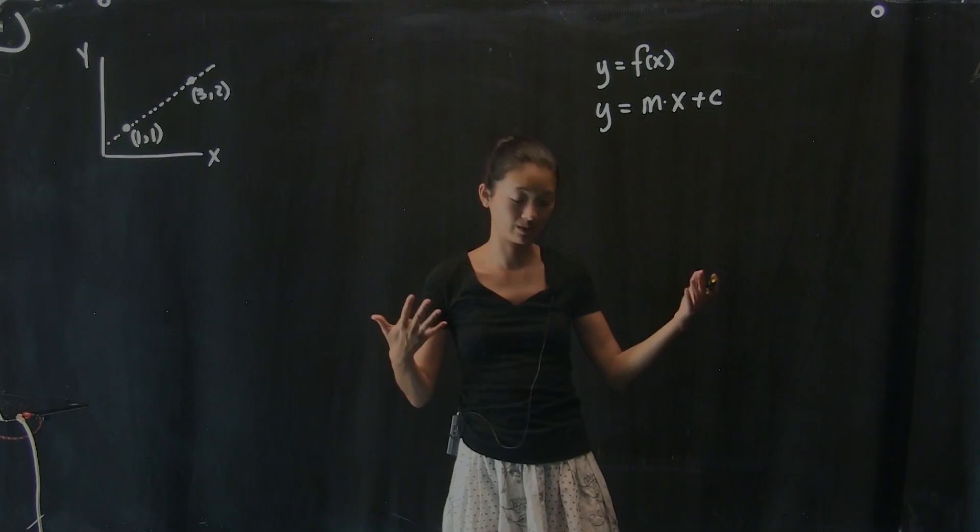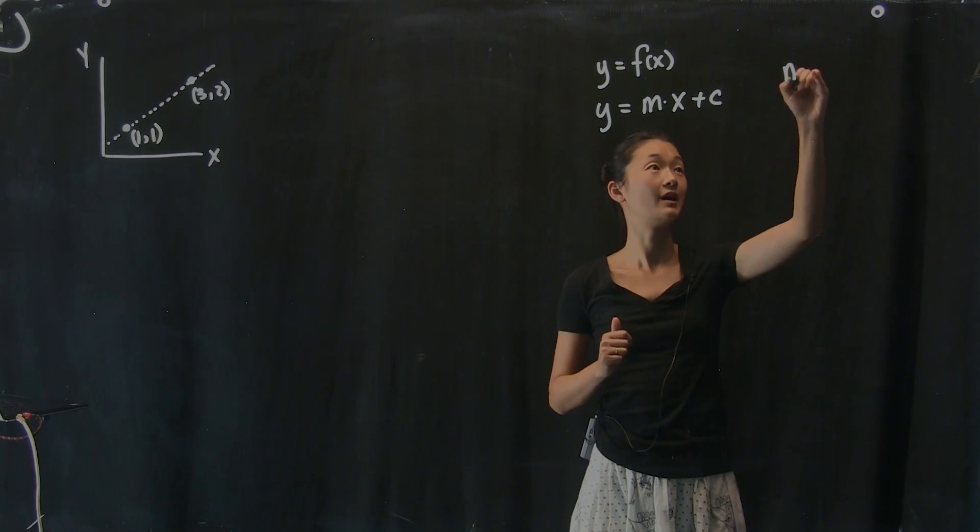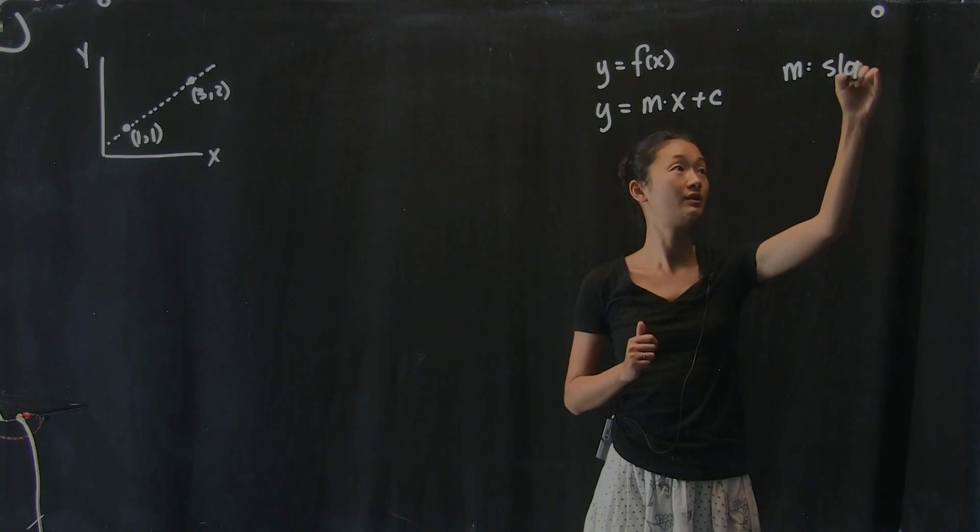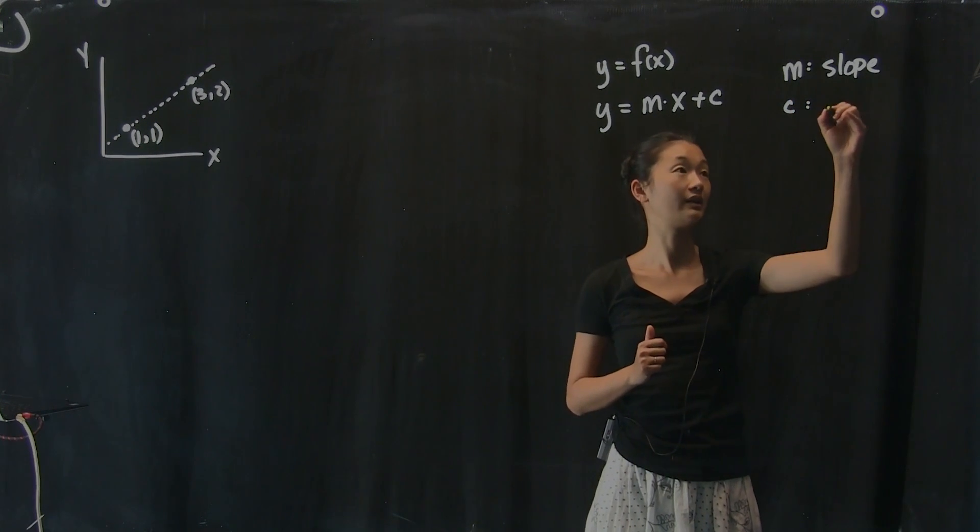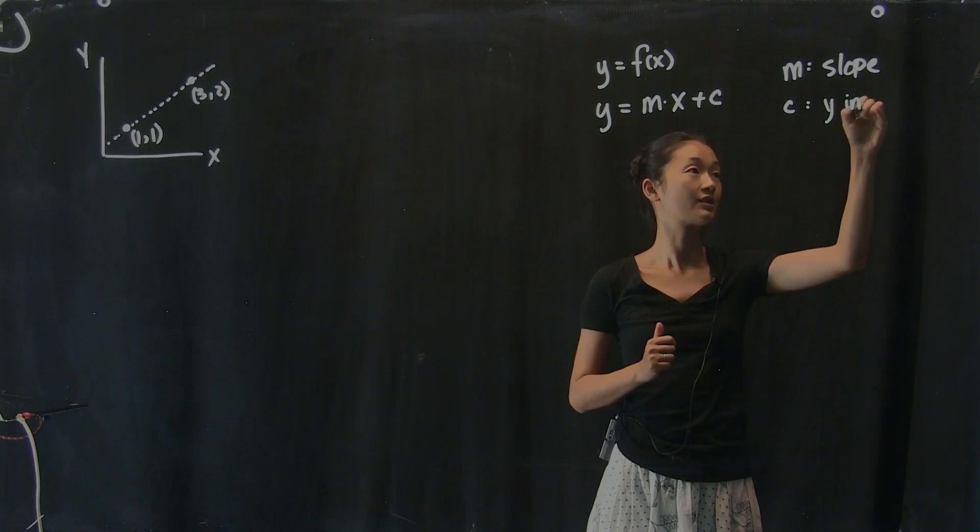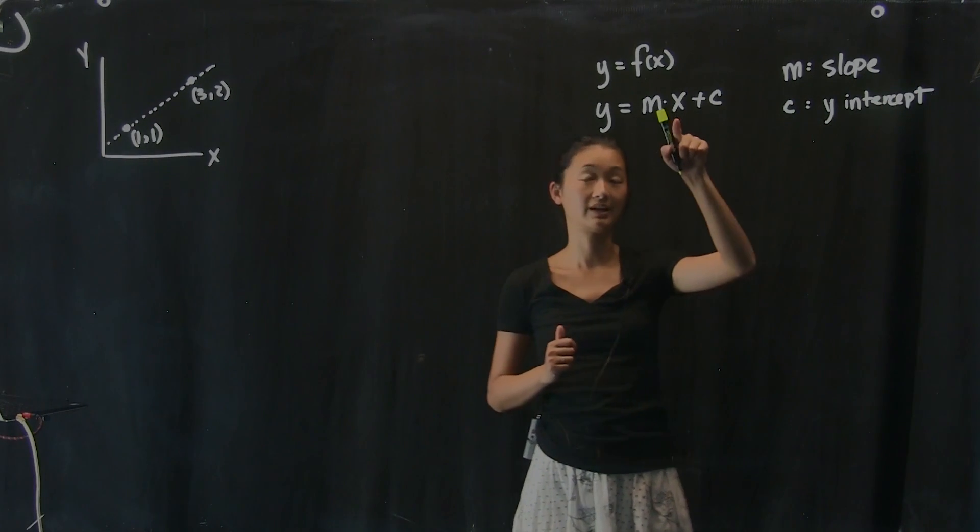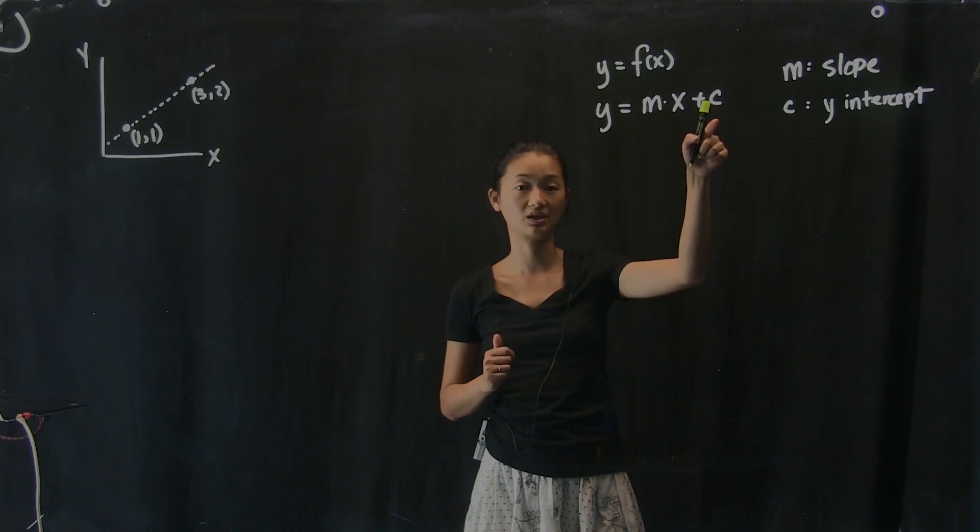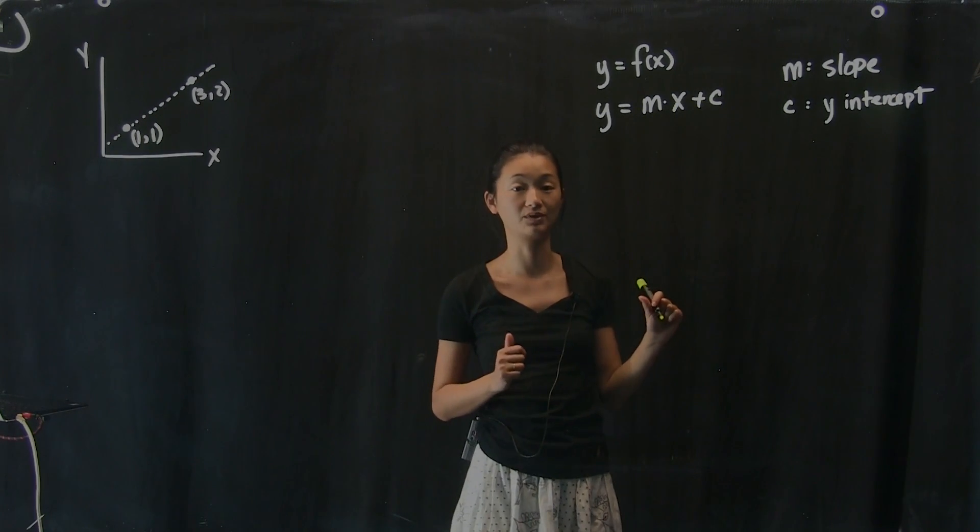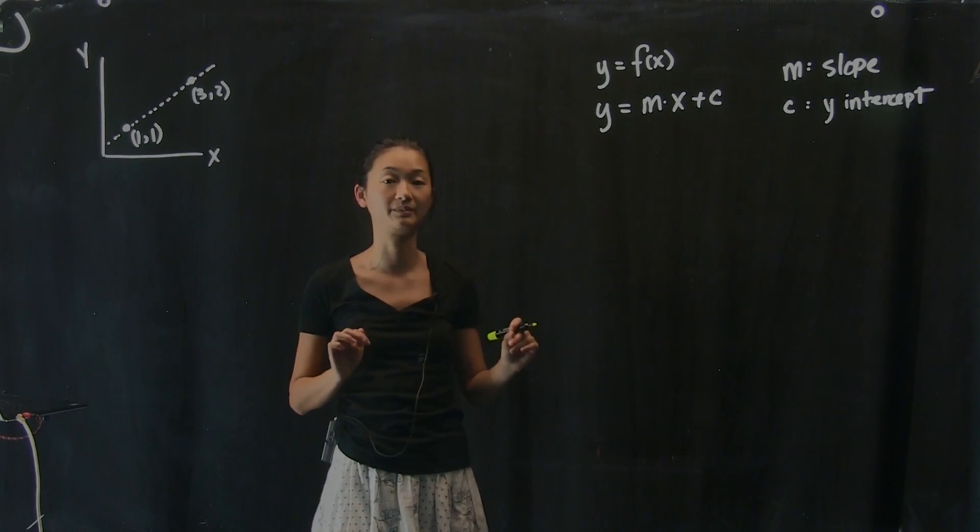So this, again, is just reminding you of some things you should know from algebra, regular algebra. So here, m is the slope of the line, and c is what I'm going to call the y-intercept of the line. We know that this is the y-intercept because if you plug in 0 for x, then y equals c. So c is just what y equals when x equals 0. This is stuff that should be very basic that you should already remember.